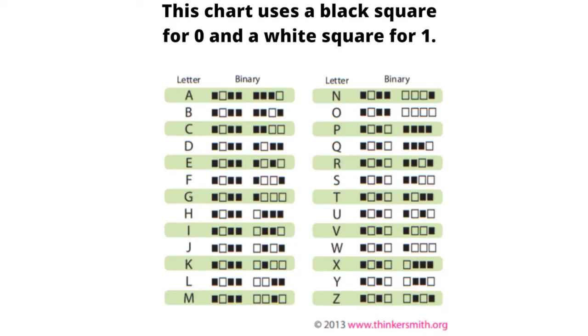So what is our project that we'll be doing? We can use this code to make a cool piece of jewelry. Take a look at this second key here — instead of using zeros and ones, it translates each zero and one to a box that is either black or white. So now, instead of zeros and ones, we have these colored squares.